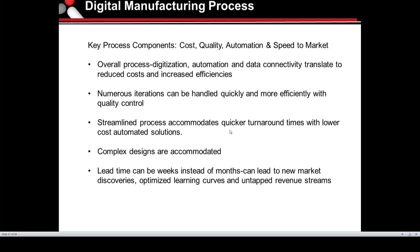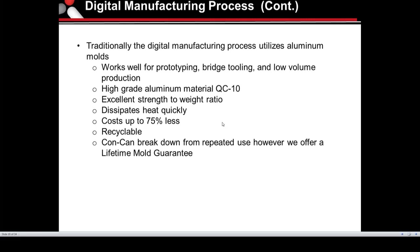Lead times can be weeks instead of months, leading to new market discoveries and optimizing the learning curves of designs and components. In rapid manufacturing, your tools are traditionally made of aluminum. Here at Eccentric, we use a high-grade QC10 aluminum. It's easier to cut, faster, a cheaper alternative to steel, and it dissipates heat quickly. It's also recyclable.